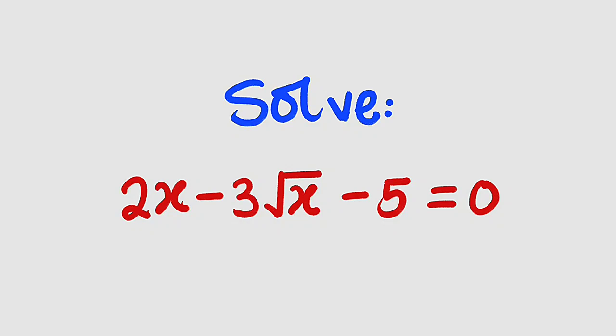Hello, good day viewers. In this tutorial, we are going to find a solution to this simple radical equation. We are asked to solve the equation 2x minus 3 root x minus 5 equal to 0. Alright, let's get started.